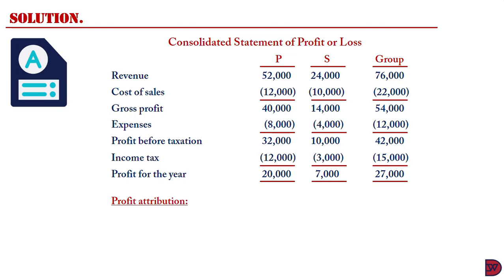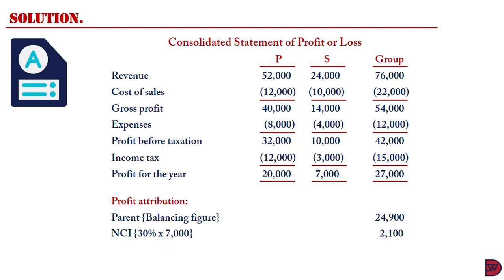The parent, Prosper, does not have absolute control. The non-controlling interest will be $2,100, which is their 30% holding — because the parent has 70% ownership — multiplied by the profit for the year of the subsidiary, which is $7,000. The balancing figure, which is the group profit for the year less that of the non-controlling interest, will be the amount attributable to the parent.